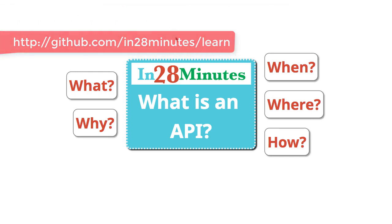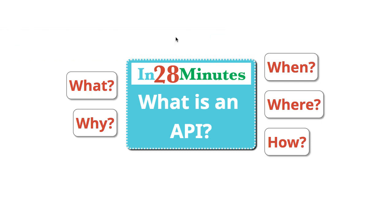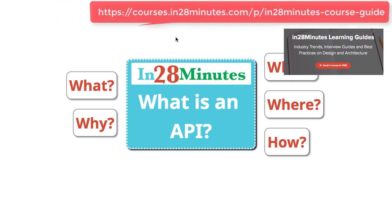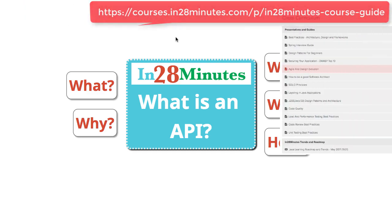In this quick video, we looked at the fact that API represents a lot of things. When we are talking about a language-related component or a language-related API, we are talking about how to call it — what are the preconditions, what are the post conditions. When we are talking about web services, API means how you can call that specific service — what is the format of the request, what is the format of the response.